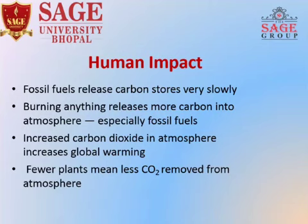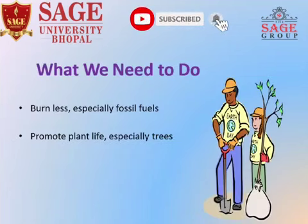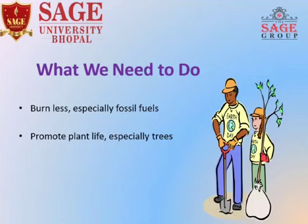Fewer plants means less Carbon Dioxide is removed from the atmosphere, so we need to do plantations more and more. What do we need to do? Burn less, especially fossil fuels. And promote plant life, especially trees. If you plant more and more trees, then you make a healthy environment.